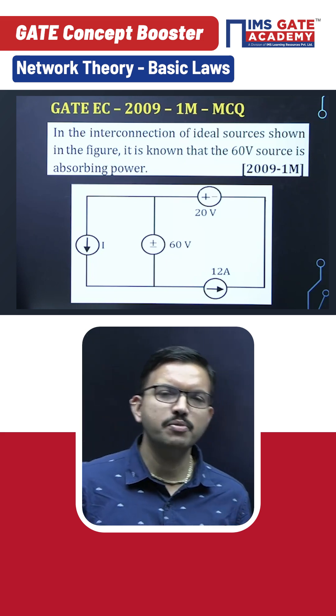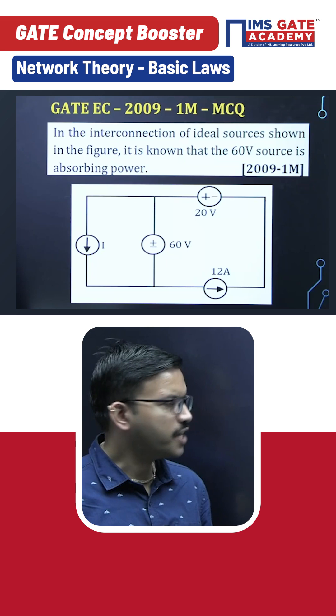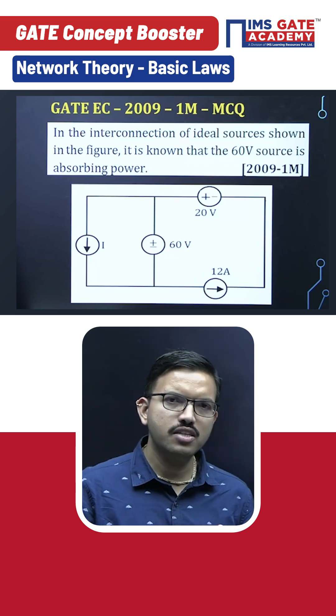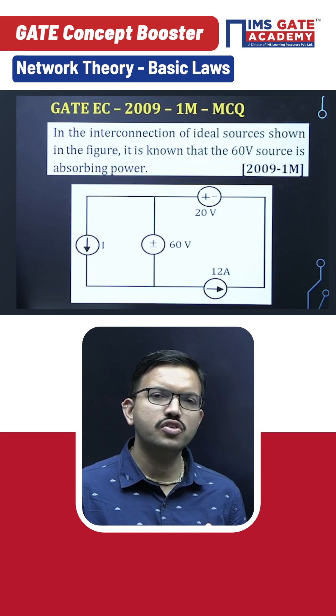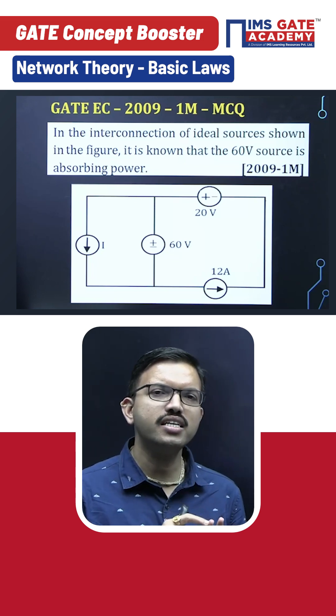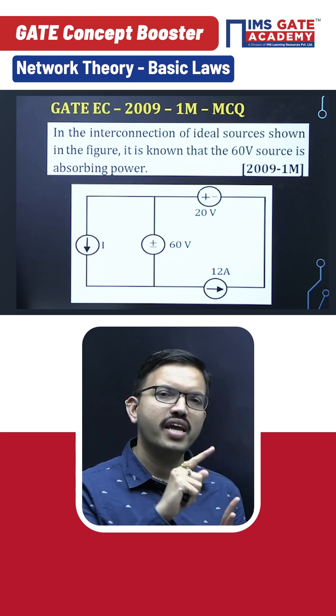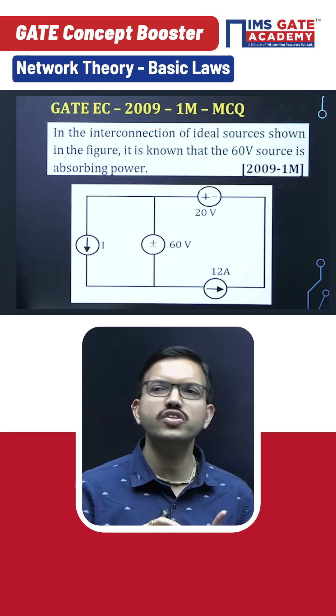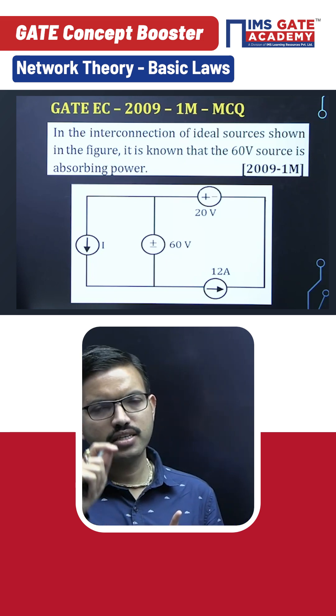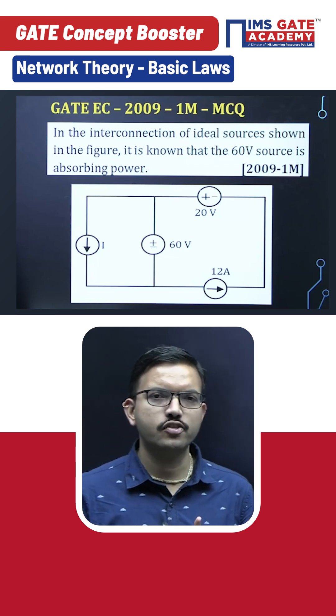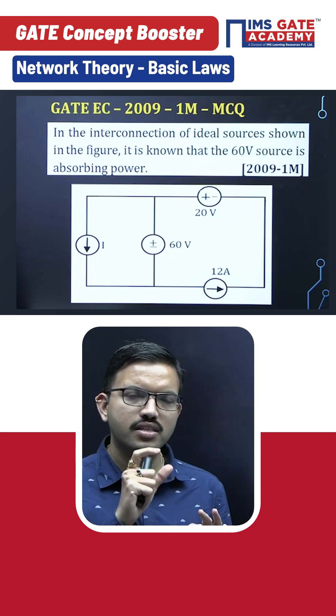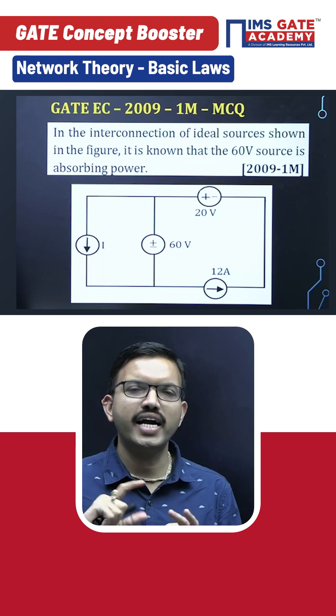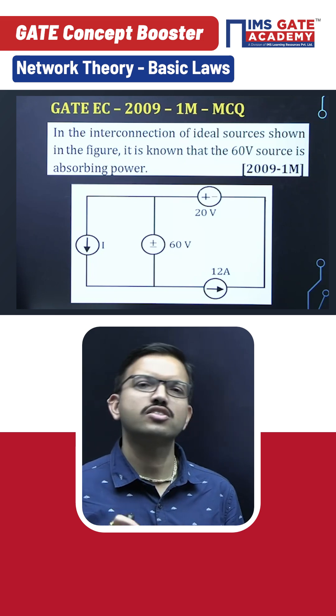Now if you observe in this particular circuit, you are getting a node where three elements are connected. Current source i is entering, whereas 12 ampere is leaving. And as we have discussed, through the 60 volt source current has to go downward—that means current is entering the node. So i and the current flowing through the 60 volt source will enter the node, and net amount of current leaving is 12 ampere.